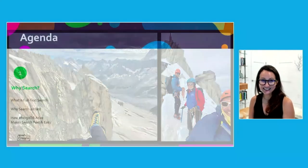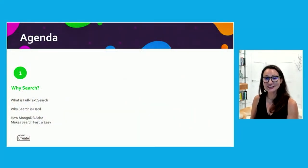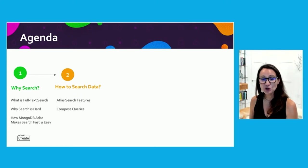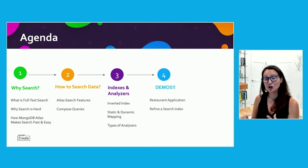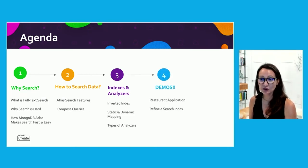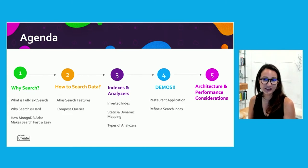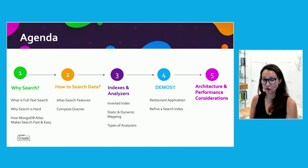We're here today to talk about Atlas Search, and I want to talk about how MongoDB made search easier inside of Atlas. We're going to talk about all the features, start building queries on those features, talk about indexes and analyzers — some of the nitty gritty hard stuff — before we move on to demos. I'm going to show you a demo, give you the code so you can download it, play with it, and build your own aggregations and search queries. Then we'll talk about architecture, what goes on underneath the hood, and how that might affect performance.